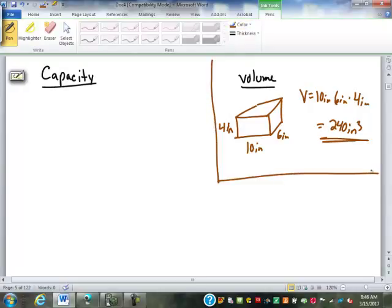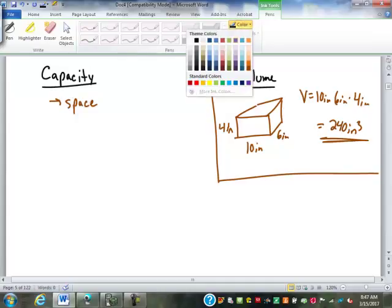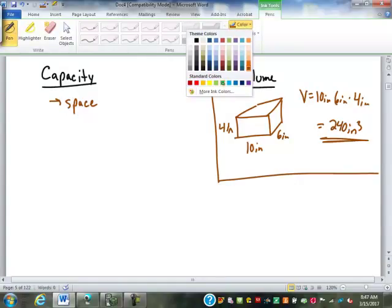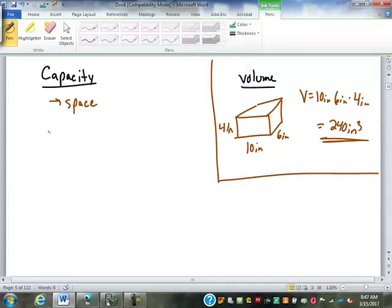Capacity describes the exact same thing, how much space is taken up by the object. Only it's not found by doing lengths, it's actually set size containers. Capacity is measuring space, measuring how much can be held within that object. It's just not done in terms of lengths.